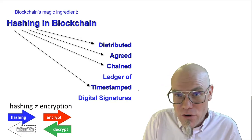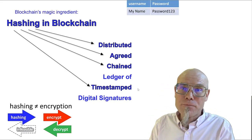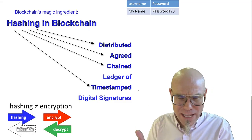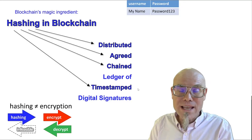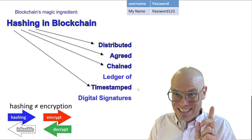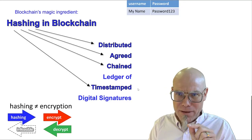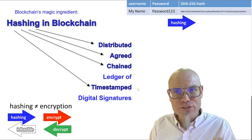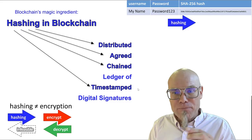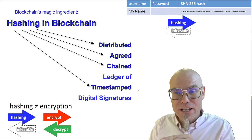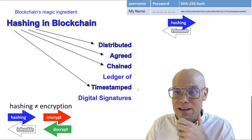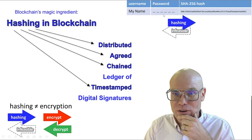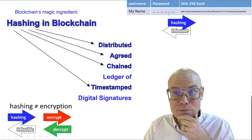We actually use it in many other applications — for example, when you save your passwords. If you go into a social media site or into your email, you give it your name and a password like 'password123.' Hopefully, the social media site doesn't store your password. What they store is a hash — they use a hash function to create a hash value. What they store is basically only that hash value. It's infeasible for anybody who hacks their servers and finds this hash value to derive the password from it. That's why it's so safe.